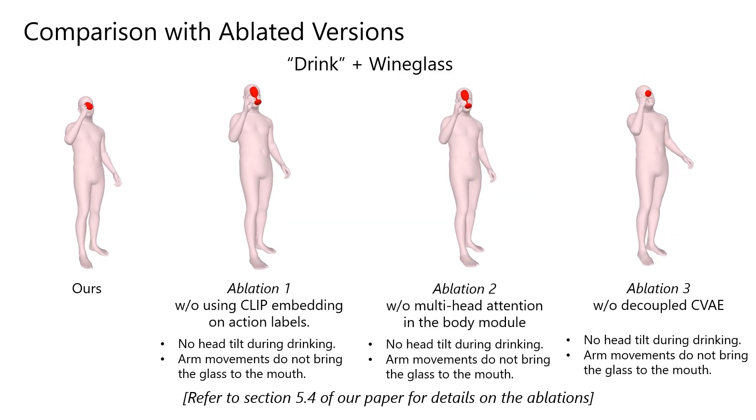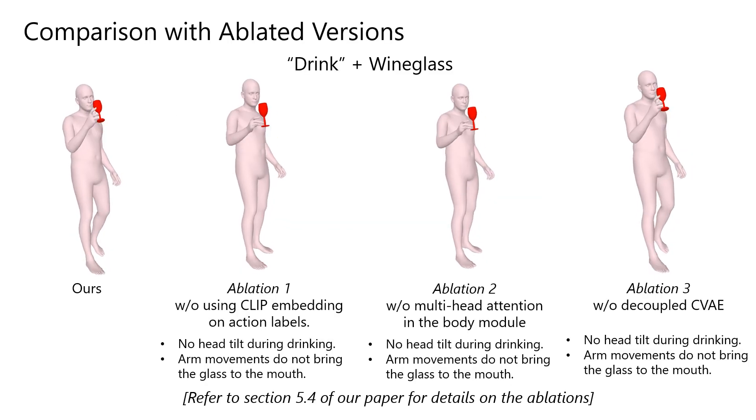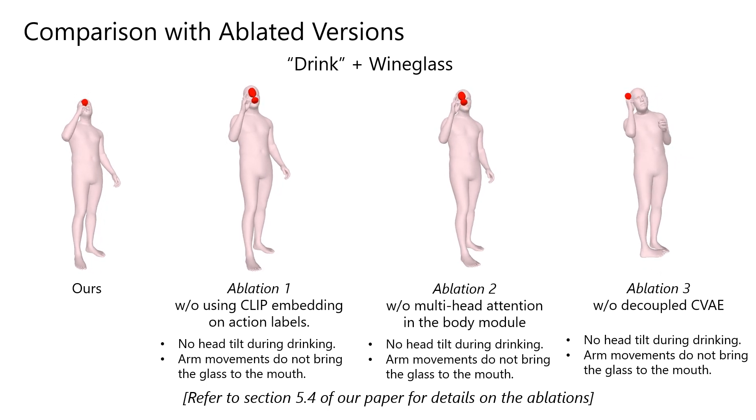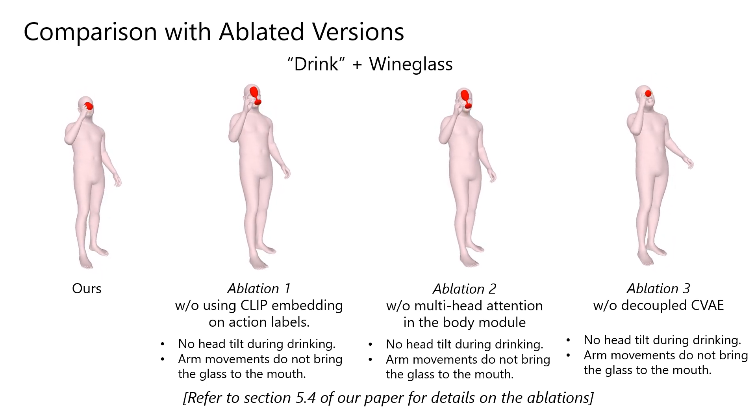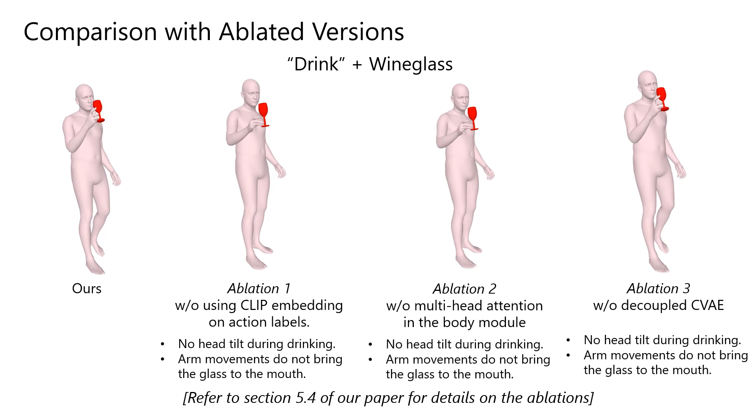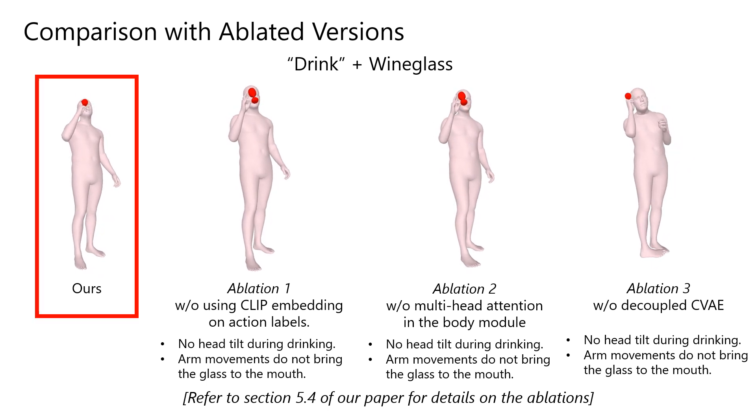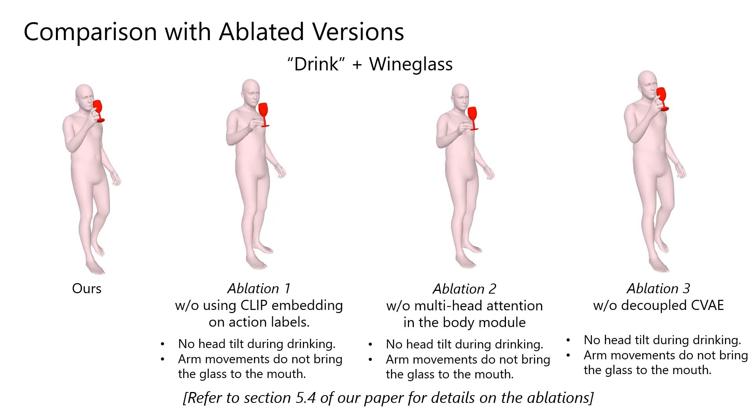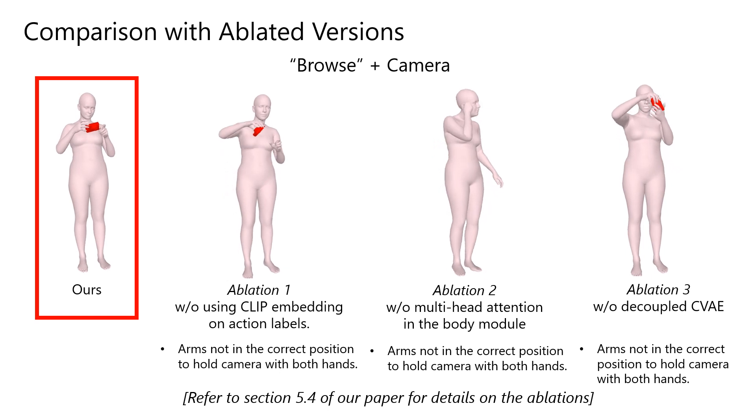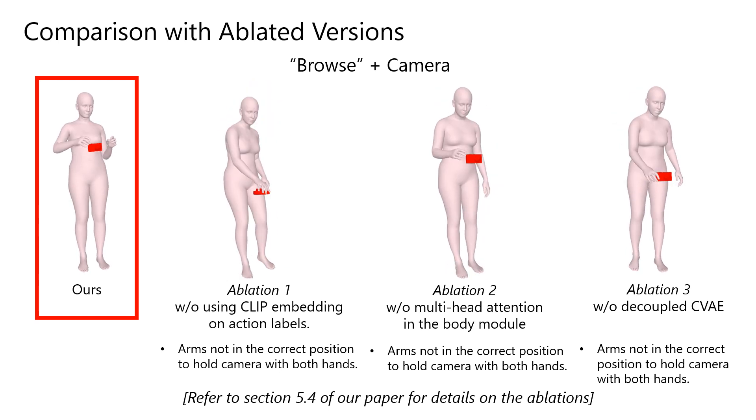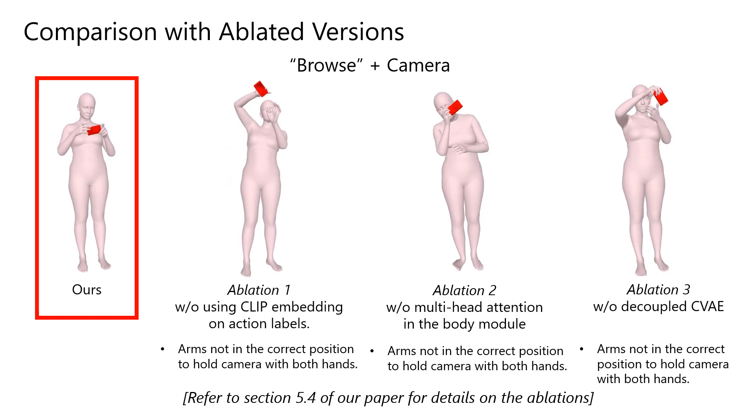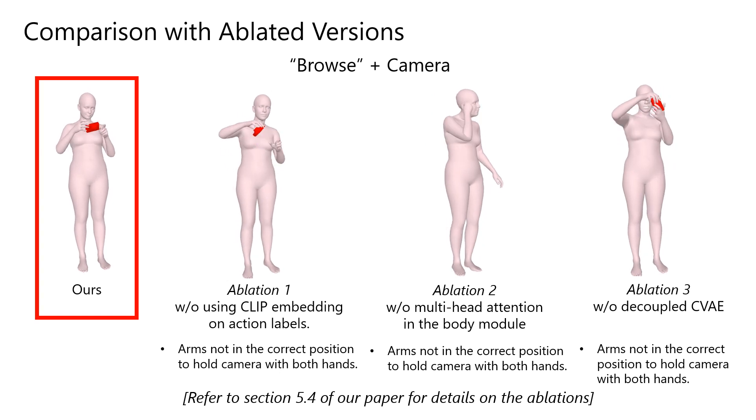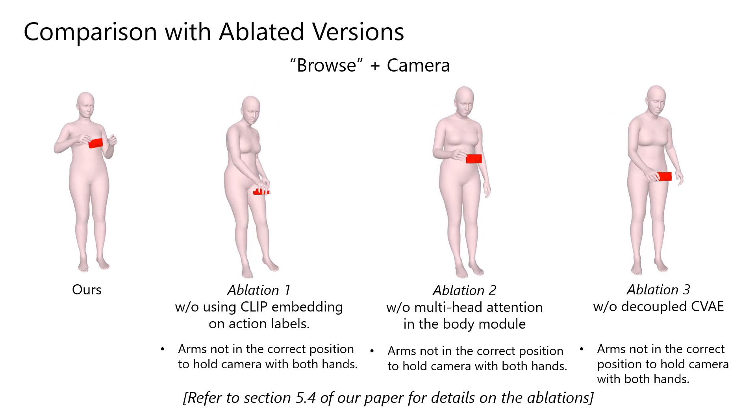Here, we compare our method with its ablated versions. We consider three ablations, which are discussed in detail in section 4.4 of our paper. We see that our method correctly synthesizes the motion of bringing the glass to the mouth and tilting back the head to drink, whereas the ablations fail to do so. Our method synthesizes the arm positions accurately, which is essential for both-handed motions like browsing the camera. Again, we see that the ablated versions are failing to do so.